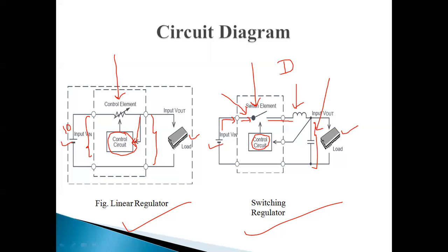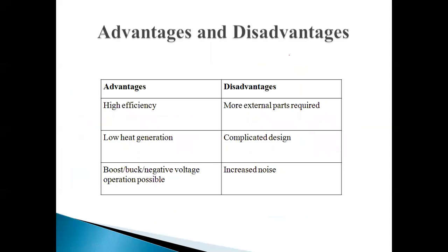By controlling the duty cycle, we can control the input to output voltage. Every converter has some different types of duty ratio equations. Based on the duty ratio equation, the output voltage is different in every converter. The duty ratio can vary from 0.1 to 1. If we provide a duty ratio of 0.5, we get a different voltage; if we provide 0.6, we get a different voltage.